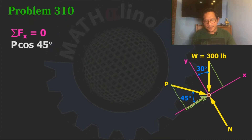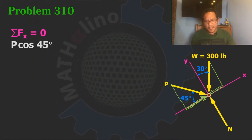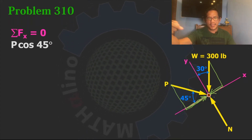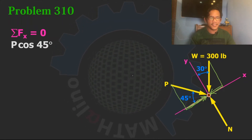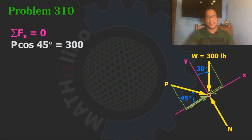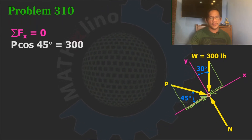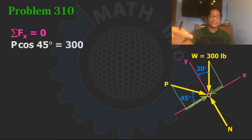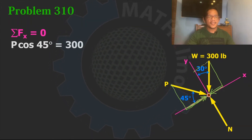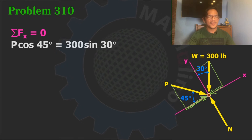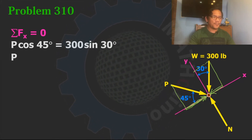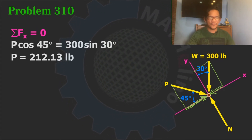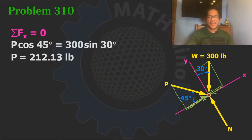The X component of W is towards the negative direction of the X axis, so minus 300. We equate forces in the positive X direction to forces in the negative X direction: P cos 45 = 300 sine of 30 degrees. Solving for P, we get our answer.